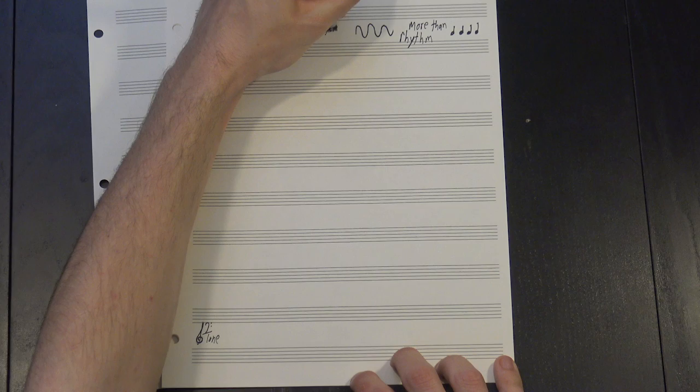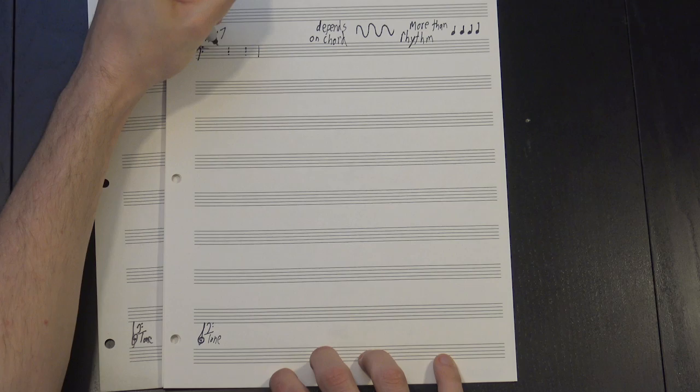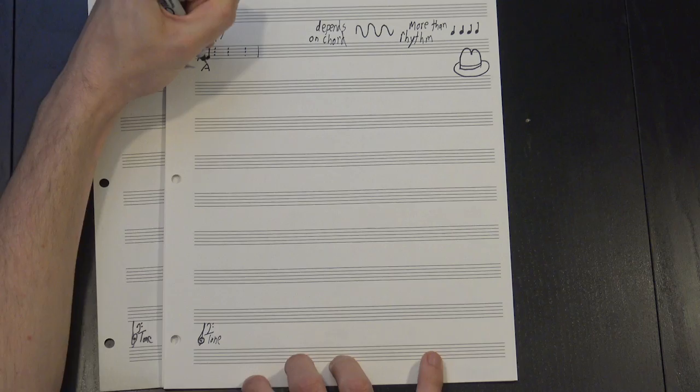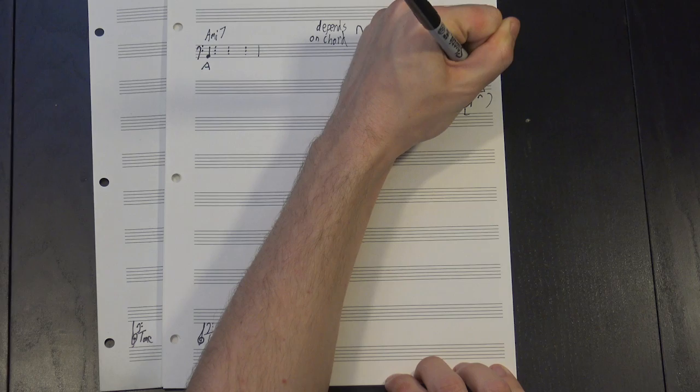We need to know what notes we're playing, which, of course, depends on the chord. Let's use A minor 7. To find our notes, we start by breaking the bar into four parts, because each beat serves a slightly different role here. The first note is usually the root of the chord. We're still playing bass, after all. We've gotta define the harmony before we can really do anything fun.